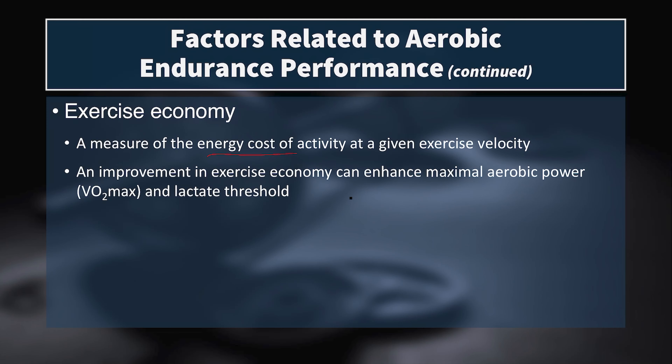Running economy is also pace-dependent. Marathon runners are highly efficient at marathon pace, but at faster paces their economy isn't as good as a miler or 800-meter runner, whose best economy happens to be at their race pace. This is where training specificity really comes into play—what paces you can maximize your running economy at—and the same goes for swimming and cycling.